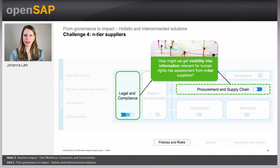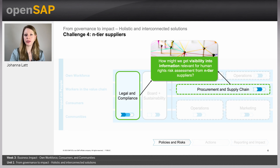The fourth challenge is line-of-business specific — gaining visibility into information relevant for human rights risk assessment from N-tier suppliers. New regulation requires businesses to look beyond their direct Tier 1 suppliers, which is really hard since businesses often do not have access to indirect suppliers. It becomes incrementally harder the further down the value chain you go. To identify risks, businesses would need information such as country of operation, industry, policies, audits, certificates, and violations of their N-tier suppliers.